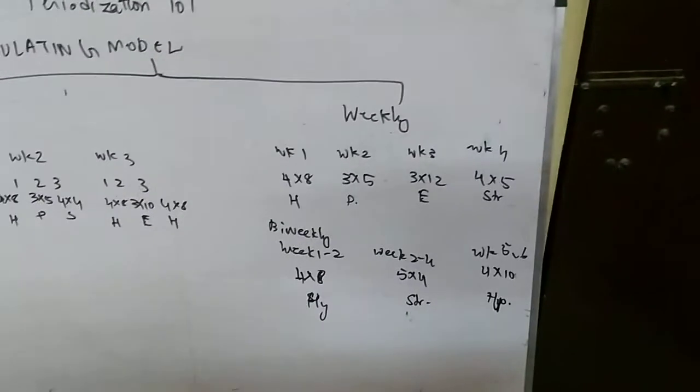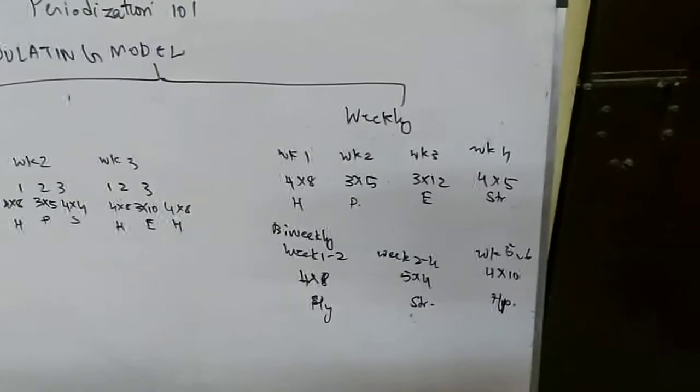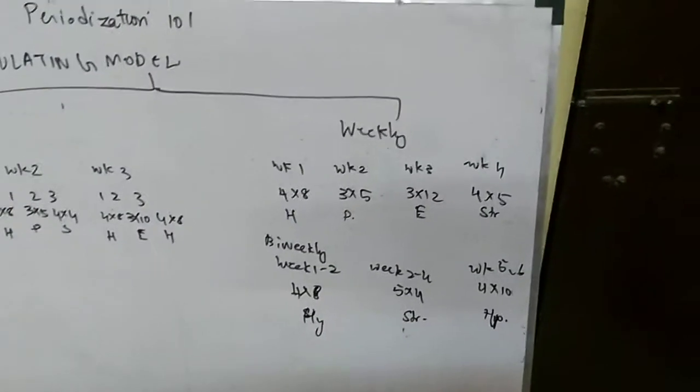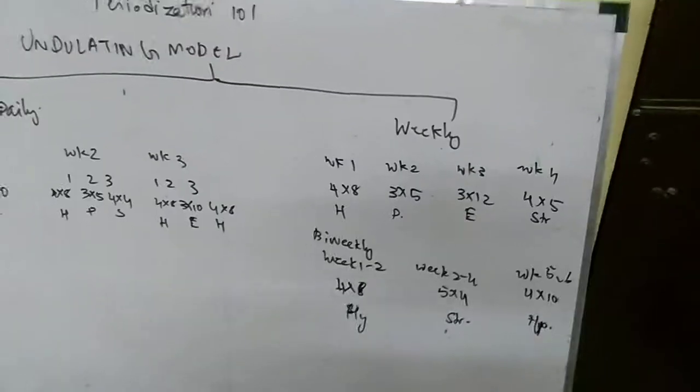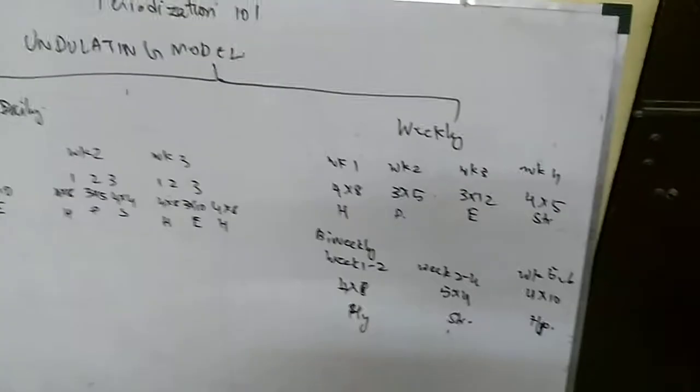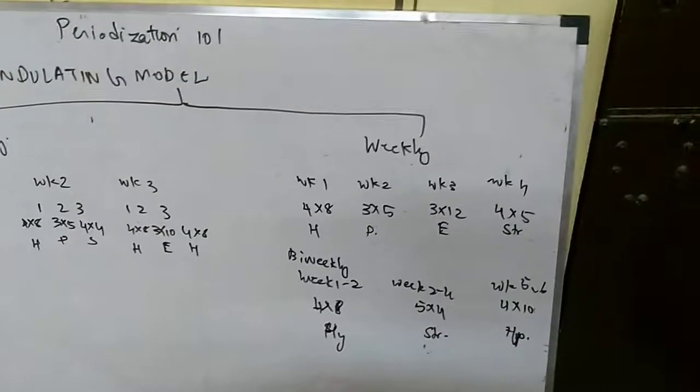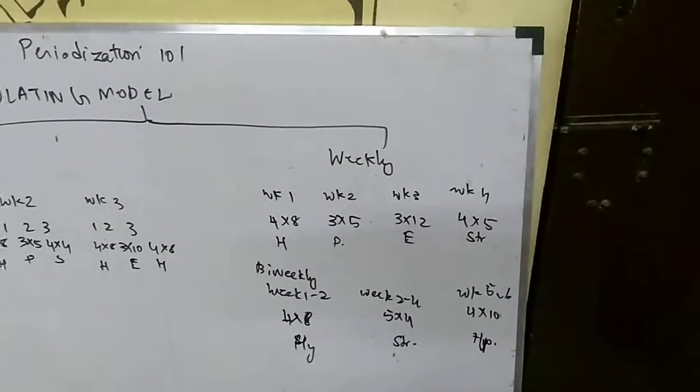Weekly, as the name indicates, instead of daily changing the reps and sets, that is volume and load, you are changing it for the week. For example, week 1, you are doing 4 by 4 hypertrophy. Week 2, you are doing the power phase of 3 by 5. Week 3, you are doing the endurance phase.